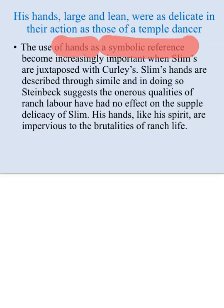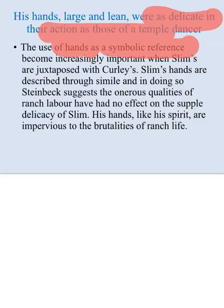But we've got some super references to hands in relation to Slim: 'Slim's hands were large and lean, and were as delicate in their action as those of a temple dancer.' Think about how many similes are linked to Slim - the more descriptive language is linked to Slim in a positive way. Therefore Steinbeck wants you to understand that Slim is different. When Steinbeck writes about Slim, he writes in a different tone - one that is universally positive - to make him seem like the prince of the ranch.